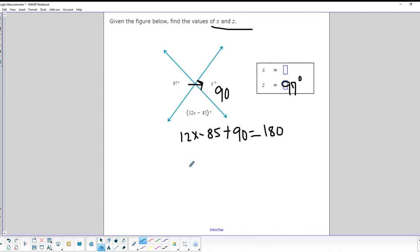All right, so let's do a little rearranging, kind of like we did with our Great Wall of China, and maybe we'll do a little bit of a jump here. So we know that 12x over here is going to equal 180 subtract 90, because we moved it over, and this minus 85 will become plus 85.